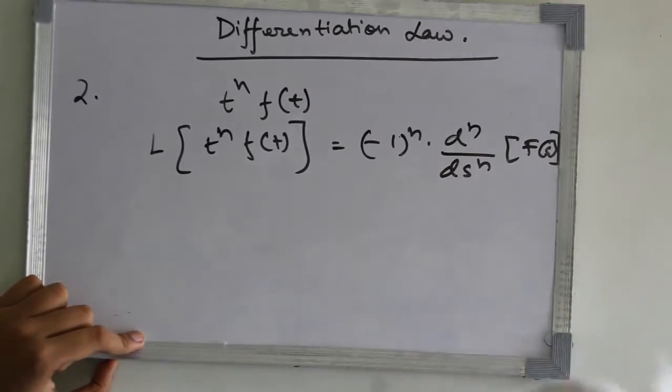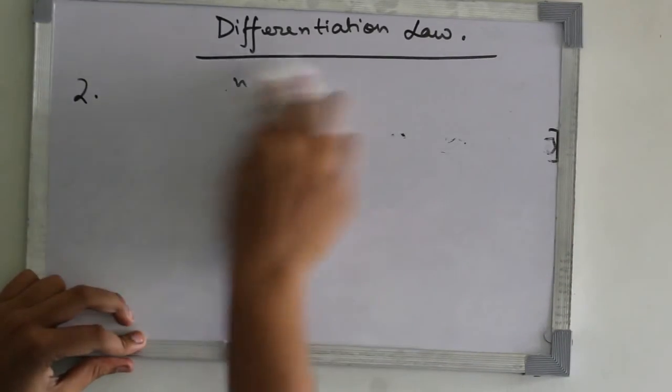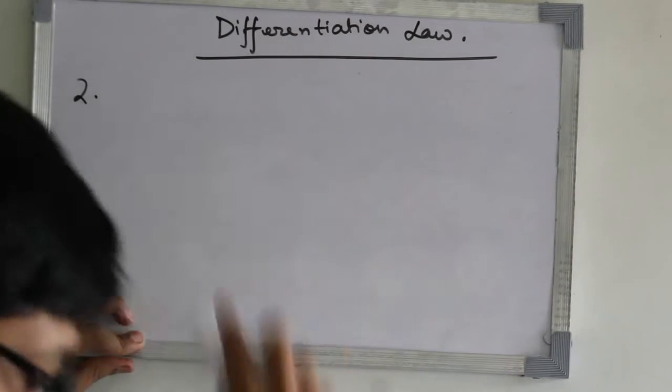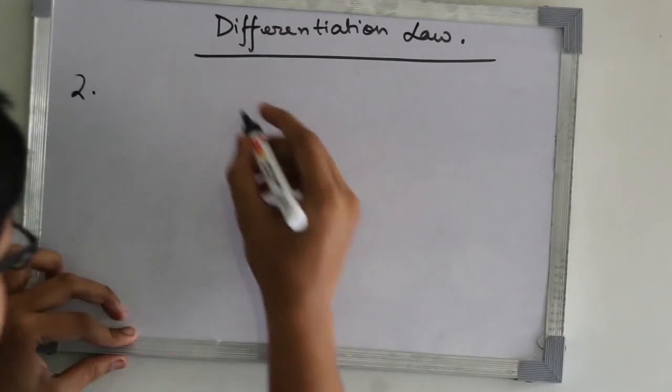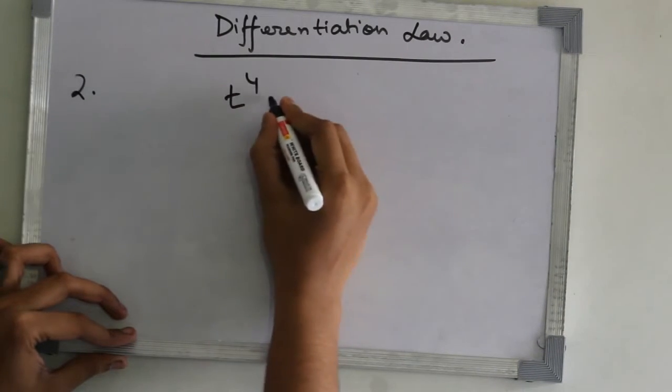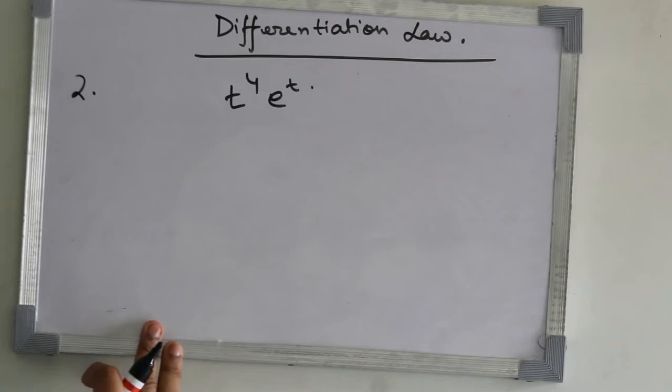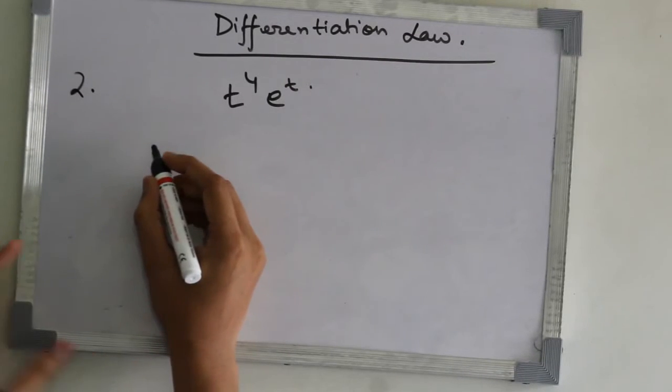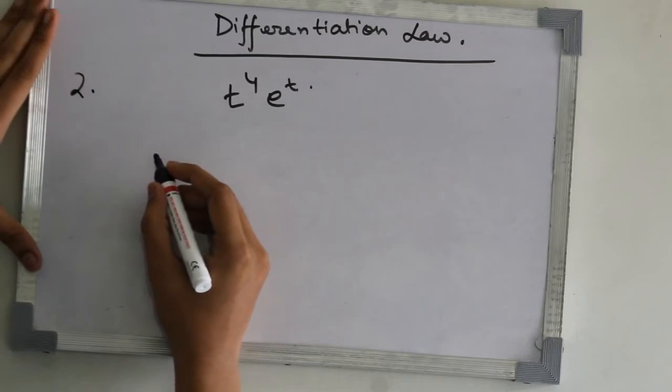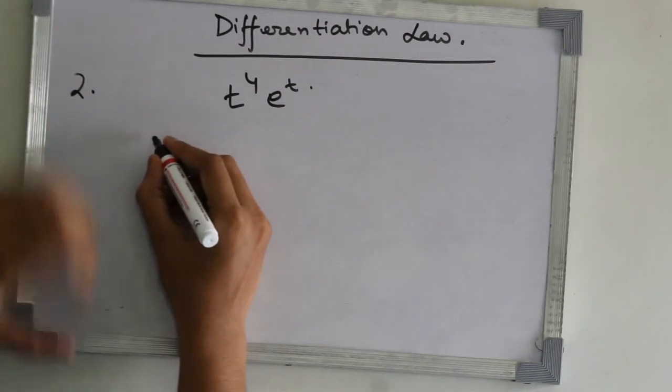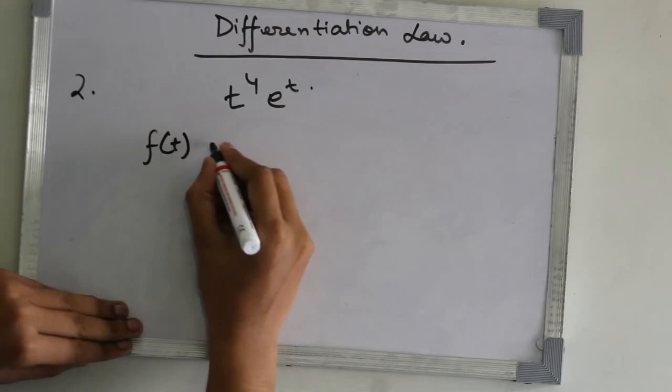Now I'm going to show you an example. Let's take a function t to the power 4 e to the power t. Here, f of t equals e to the power t.